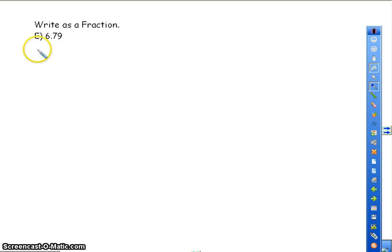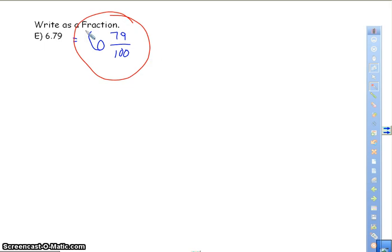Now, when I write it as a fraction, it's the same thing. I know that this is going to be 6 and 79 hundredths. So I'm going to write it out as a fraction using place value, 6 and 79 hundredths. If you can simplify it, you simplify it. If you can't, that's your answer. And in this particular problem, I can't simplify. So that's my answer.